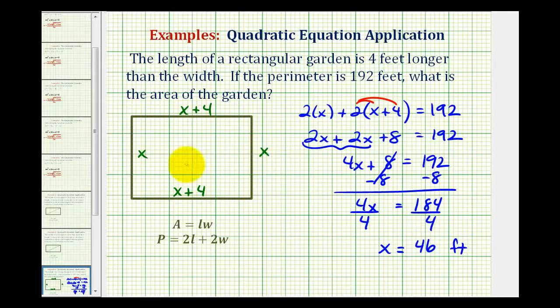So going back over to our sketch, if this is 46 feet, 46 plus four equals 50. So this would be 50 feet.